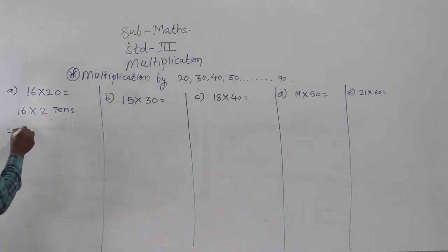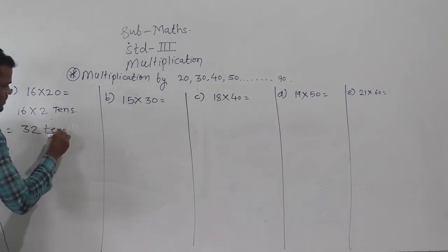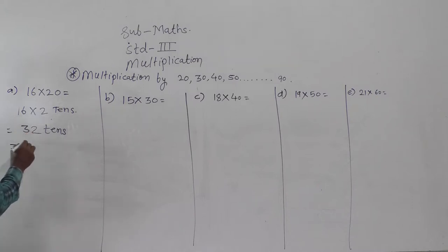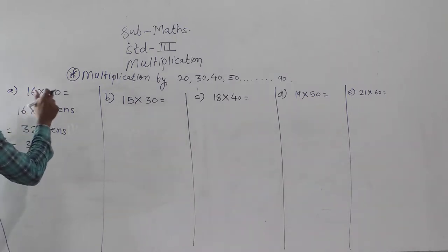16 twos are 32 tens, and then 32 tens means 320. So this is the product of 16 and 20.